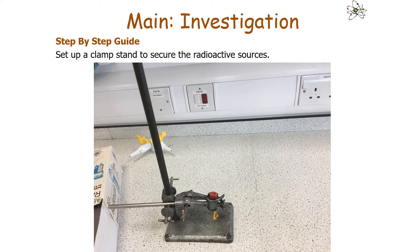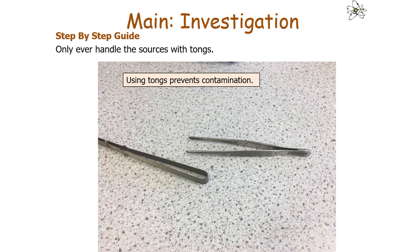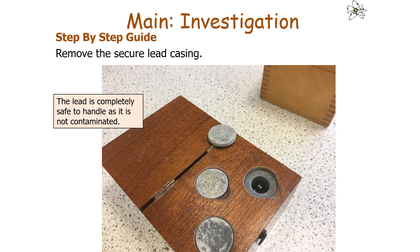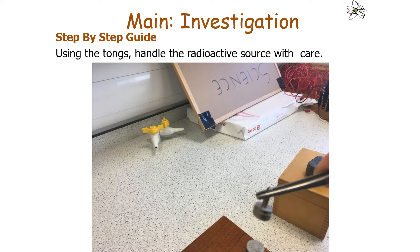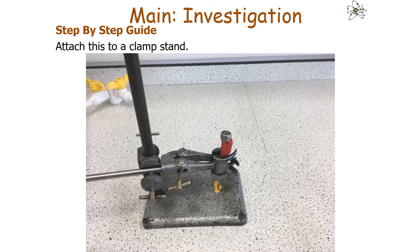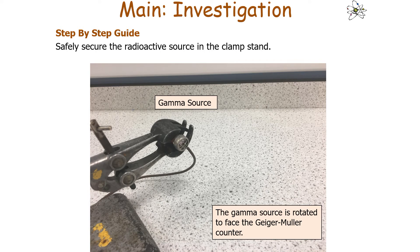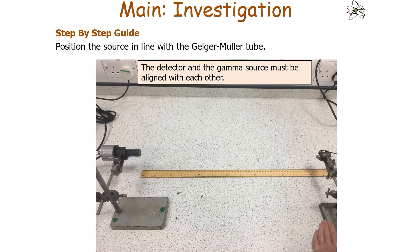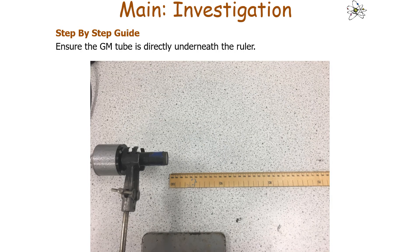Set up a clamp stand to secure the radioactive source. When handling sources, only ever use tongs, as this prevents contamination from unstable nuclei coating you or your clothes. Remove the secure lead casing — the lead is safe to handle as it is irradiated, not contaminated. Using tongs, handle the radioactive source carefully and place it in the secure holder as shown in the diagram. Attach it to the clamp stand and rotate the gamma source to face the Geiger-Müller counter, ensuring both are directly aligned under the measuring scale of the ruler.